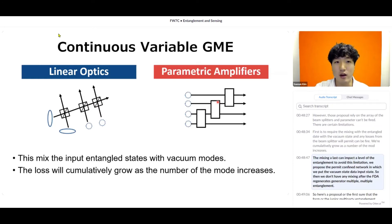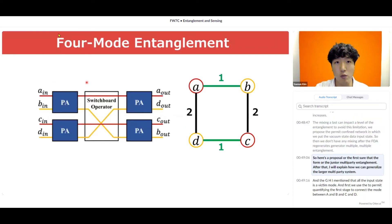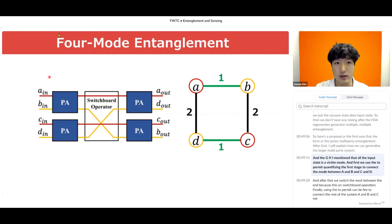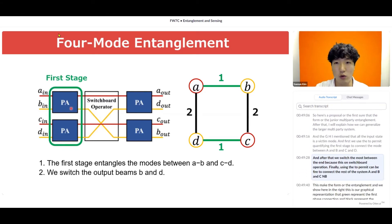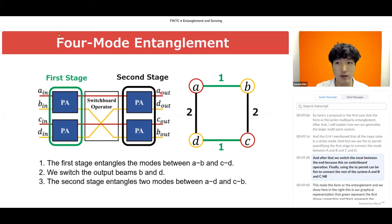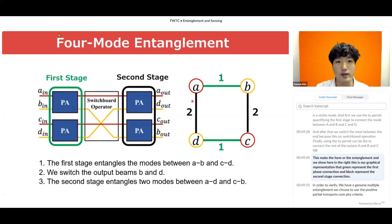Any losses from the beam splitter or parametric amplifier will accumulatively grow as the number of modes increases. This mixing and loss can degrade the level of entanglement. To avoid this limitation, we propose a parametric amplifier network in which we put the vacuum state as the input, so we don't have any mixing after generating the multi-partite entanglement. In our four-mode proposal, all input states are vacuum modes. We use two parametric amplifiers in the first stage to connect modes A-B and C-D, then switch modes B and D — a switchboard operation — and finally use two more parametric amplifiers to connect A-D and C-B, creating four-mode entanglement. The graphical representation shows green for first-stage connections and black for second-stage connections.